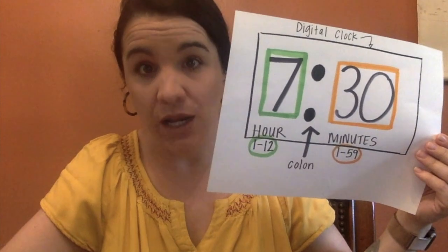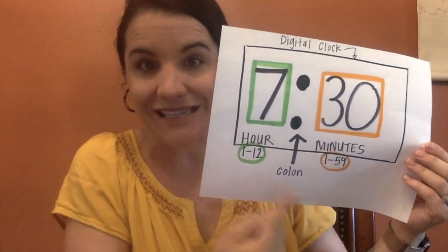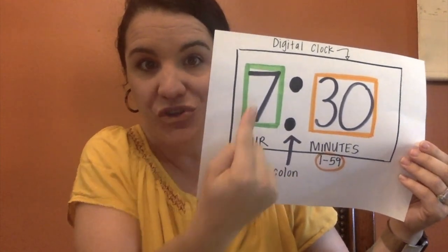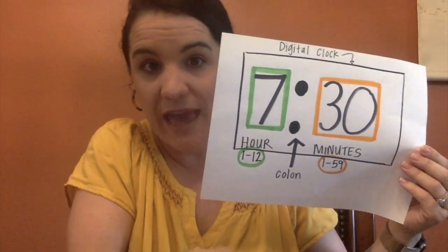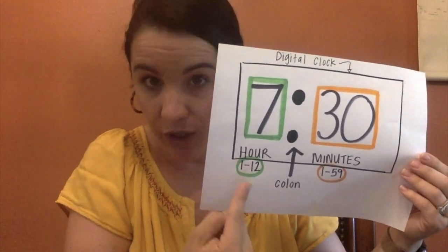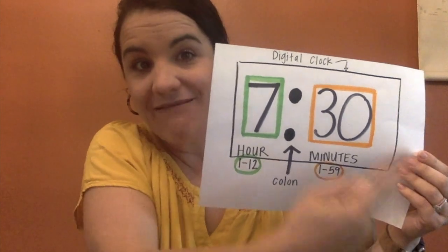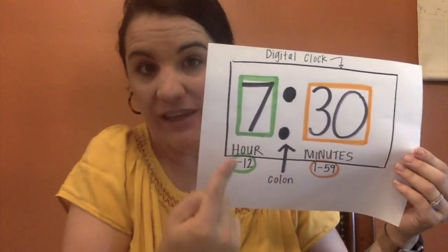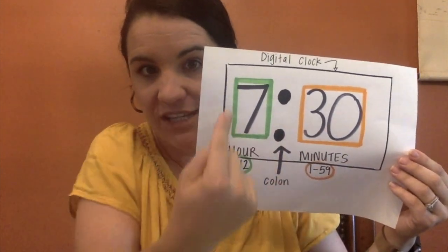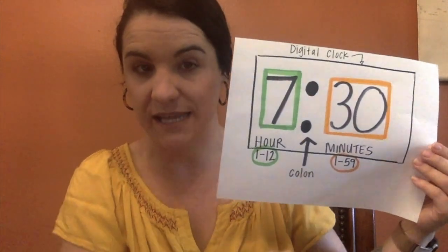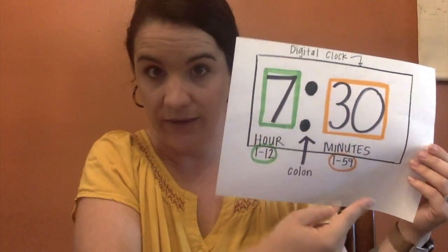Before we start learning about analog clocks, we're going to review digital clocks. Remember, we said when we say time on a digital clock, we say them as two separate numbers. We have the hour, the colon, and then we have the minutes. We would say this time as 7:30. Let's do some really quickly just to make sure that we locked in the knowledge. Let's get started.